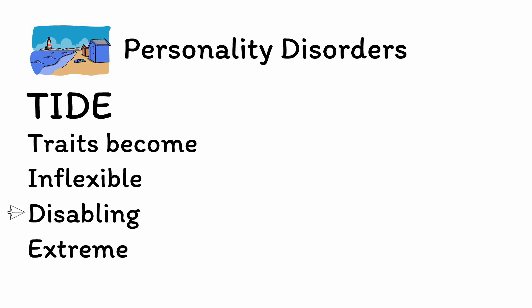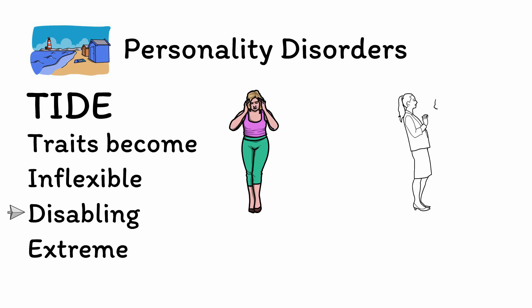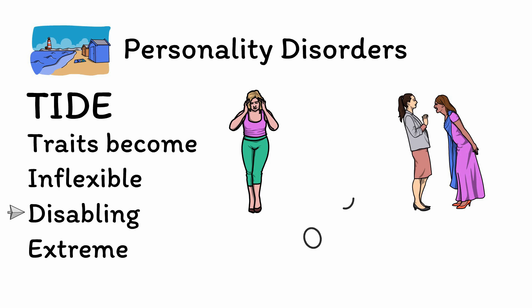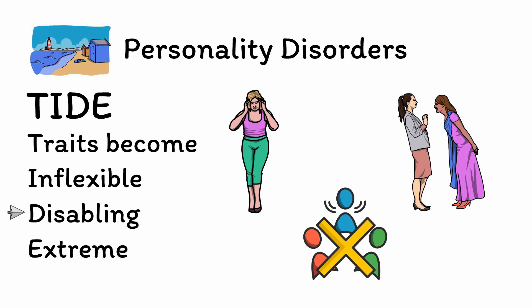Next, D is for disabling. The problematic nature of the traits seen in personality disorders are not only distressing to the individual, but also aggravating to the people around them, resulting in significant social and occupational dysfunction. In particular, personality disorders tend to impact one's ability to form lasting and meaningful relationships, leading many to have chaotic or destructive relationships with others, or, conversely, to shy away from seeking connection altogether.